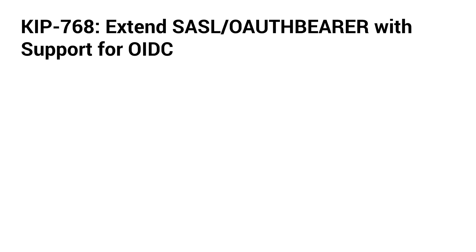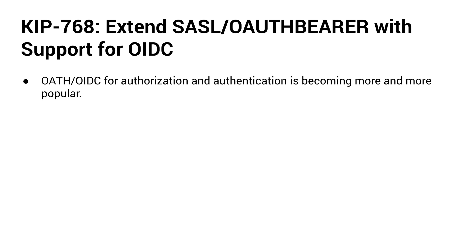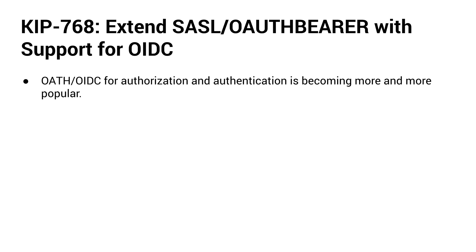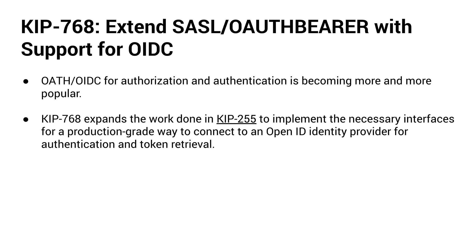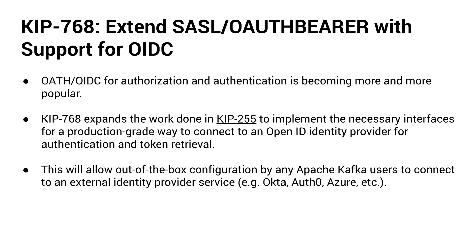Next, we have KIP 768 that extends SASL OAuth Bearer with support for OIDC. The industry is rallying around the OAuth OIDC framework for authorization and authentication, so naturally it made sense to incorporate it here. The work in this KIP might sound familiar as the design and groundwork for supporting this was completed as part of KIP 255, but that wasn't quite a production-ready implementation. KIP 768 finally implements the necessary production-grade interfaces to allow for out-of-the-box configuration by any Kafka user to connect to many popular external identity providers like Okta and Auth0.